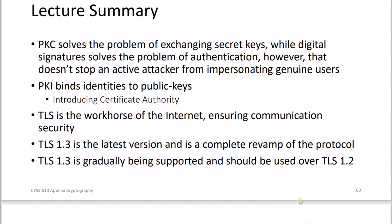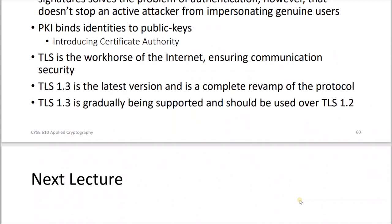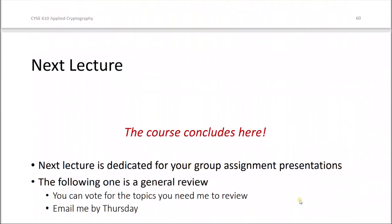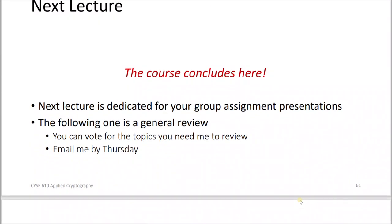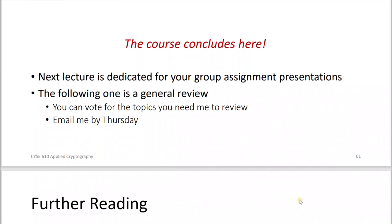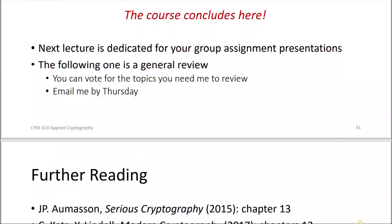In summary: public key cryptography solves the problem of exchanging secret keys, while digital signatures solve the problem of authentication. However, they don't stop attackers on their own — this is why we have PKI, which binds identities to public keys. TLS is the workhorse of the internet ensuring communication security, and TLS 1.3 is the latest version, which is now widely supported and used.